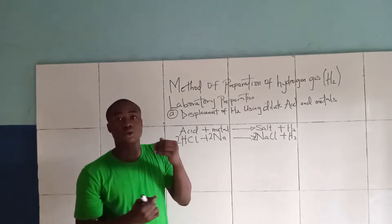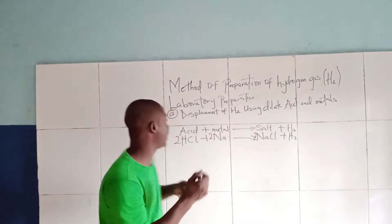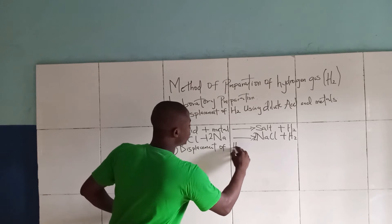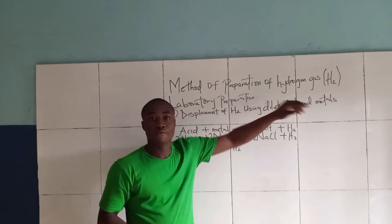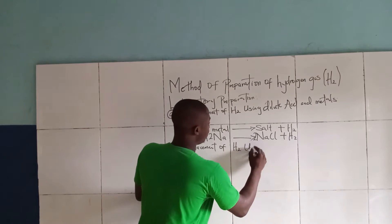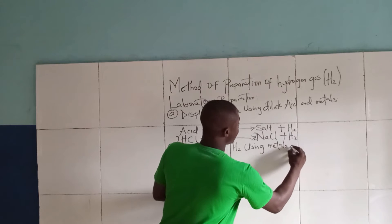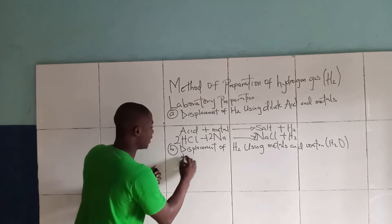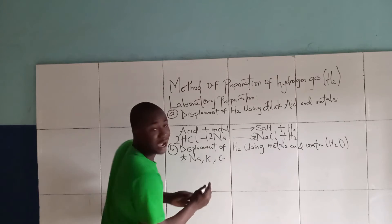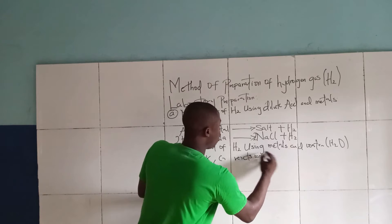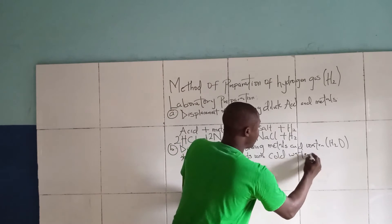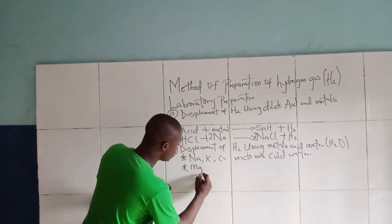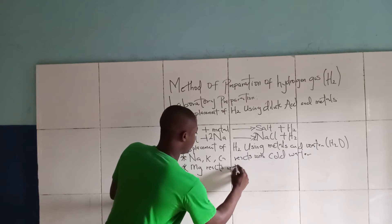Another method of displacing hydrogen gas is displacement of hydrogen gas from metals and water using metals and water (H₂O). It should be noted that sodium, potassium, and calcium react with cold water. Magnesium reacts with hot water.